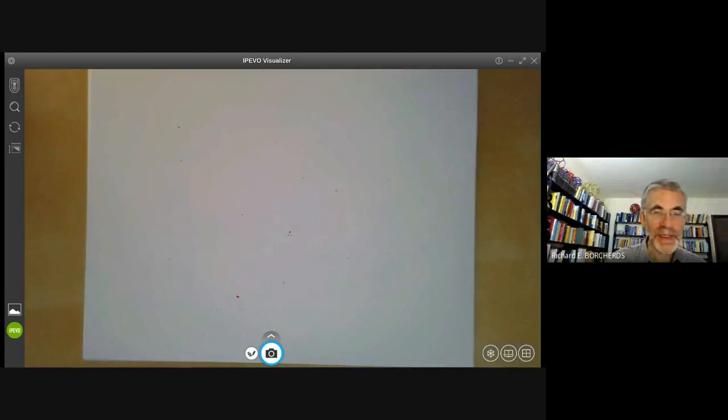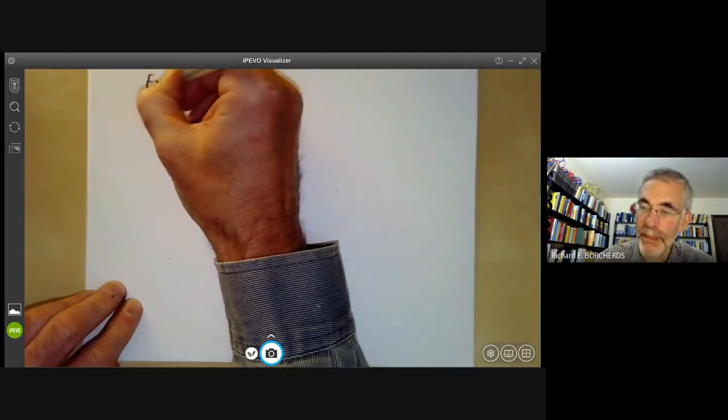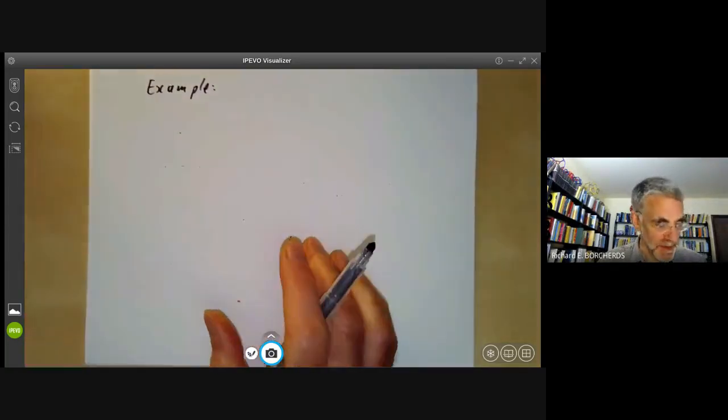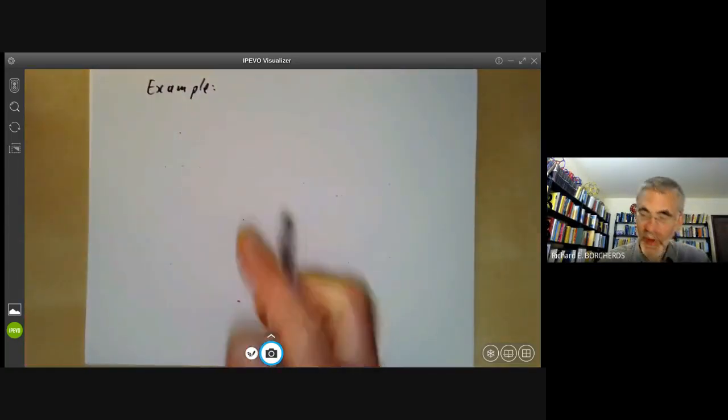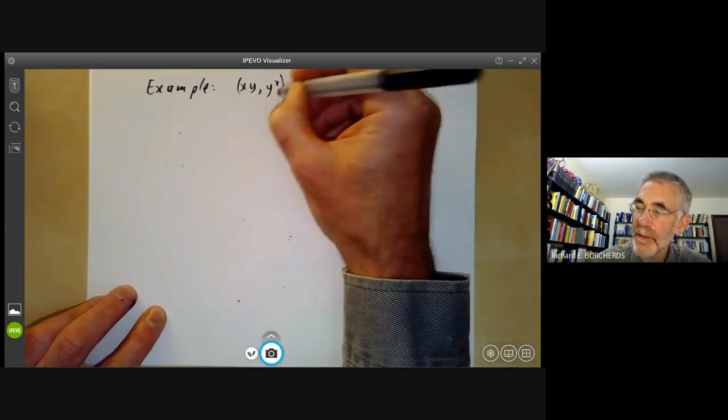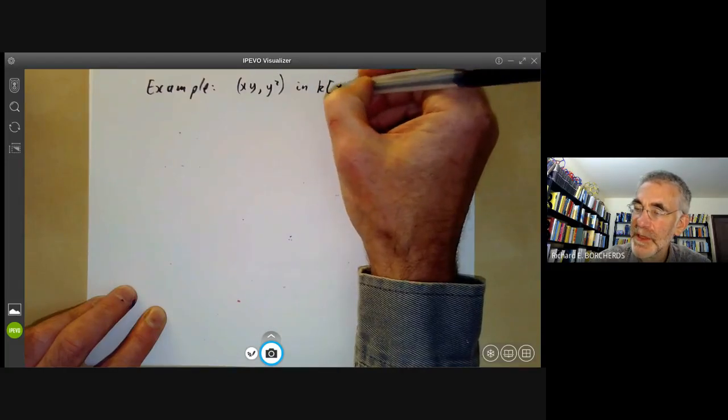Now let's look at an example of this. Let's look at the ideal generated by xy and y squared in the ring of polynomials in two variables over a field.